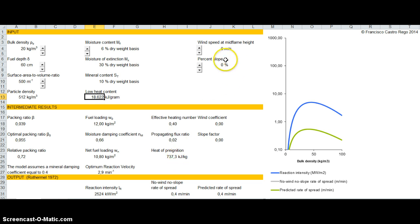But then we can look at the effects of wind speed, for instance, at mid-flame height. So instead of zero, we now have 0.4 meters per minute of the no wind, no slope rate of spread, and the same predicted rate of spread, because we have no wind. So now we could start with some wind.